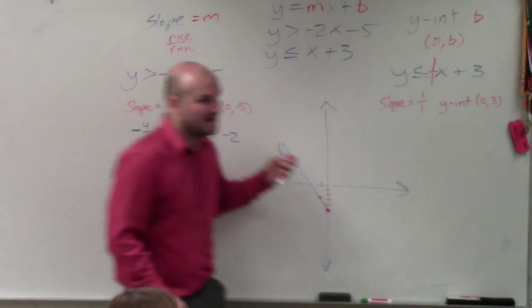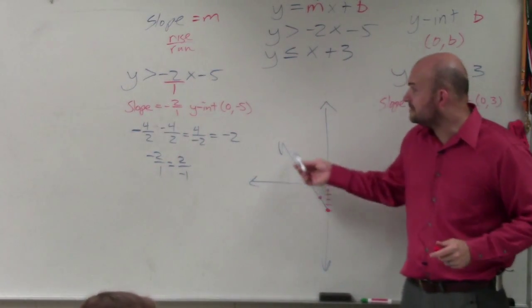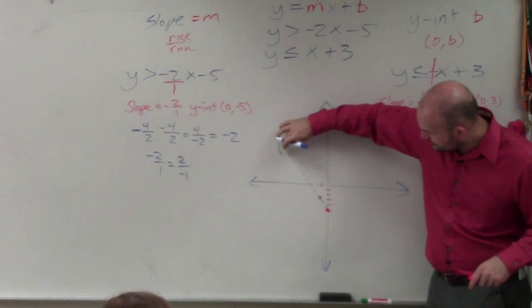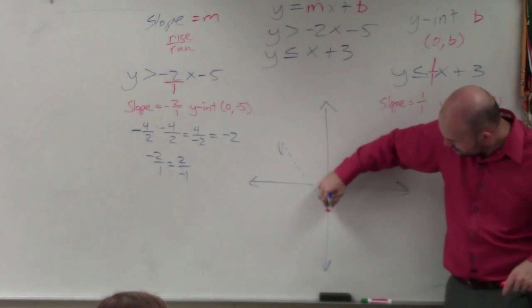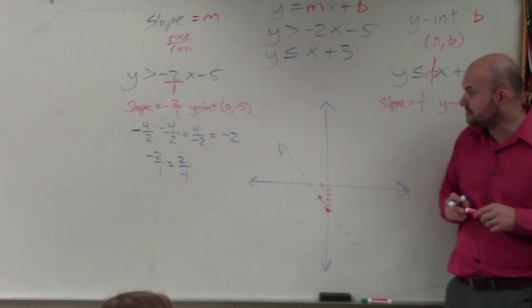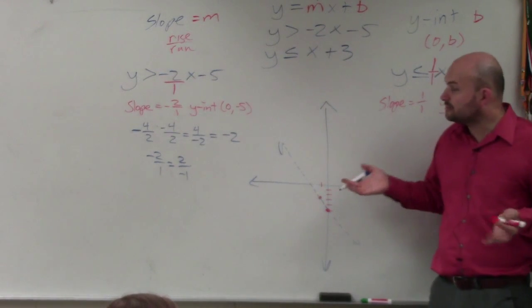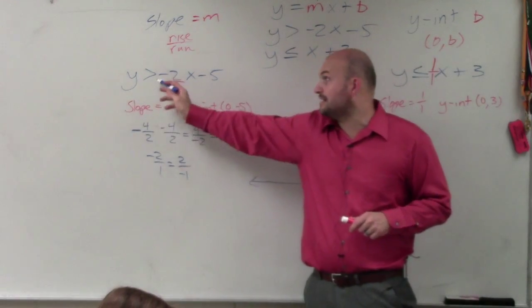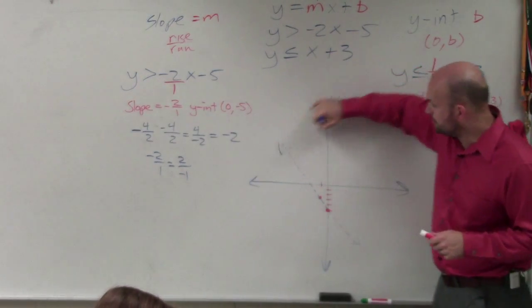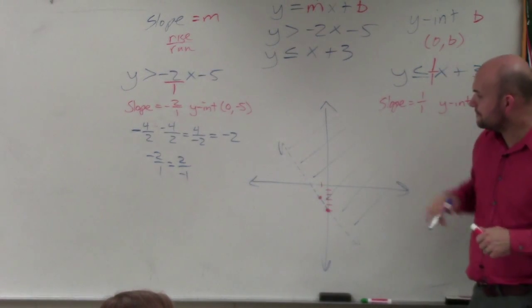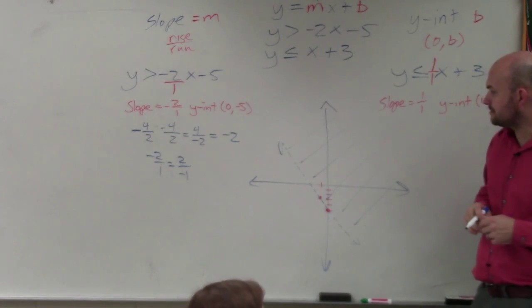The mistake that I made was that this is a greater than, so it should be a dashed line, right? So you create a nice little dashed line. Then to determine where should I shade, since my inequality is solved for y and it's greater than, then I know that it's going to go above. You could also use the test point 0, 0, but I'm just trying to make this a little bit quicker.